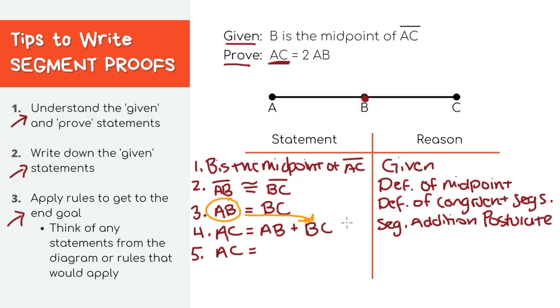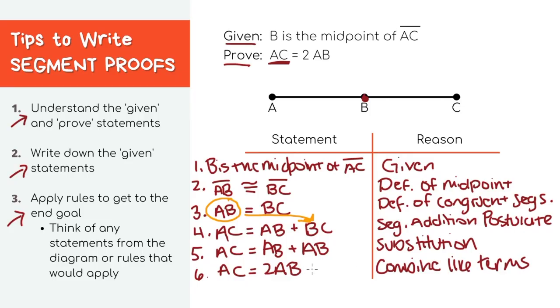We'll get the length of AC equals AB plus AB, and the reason is just simplifying or combining like terms.